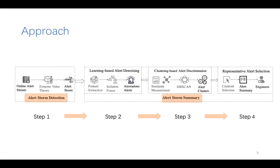Then, if an alert storm case is discovered, the second component will be triggered to assist engineers to identify the problem. The alert storm summary includes three steps.